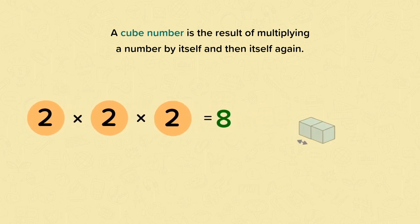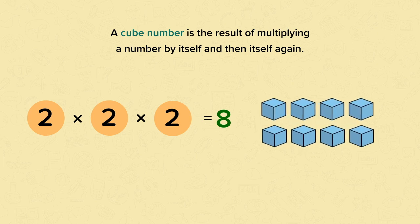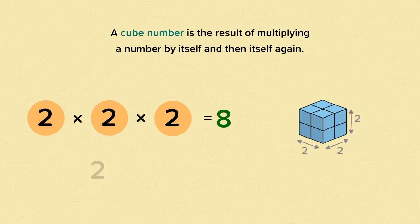If we make a large cube that is 2 cubes in length, width, and height, it would be made up of 8 cubes all together. And this is how we write 2 cubed: 2 cubed equals 8.